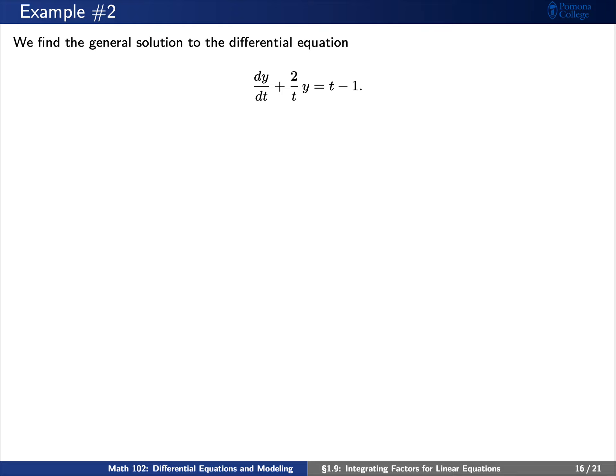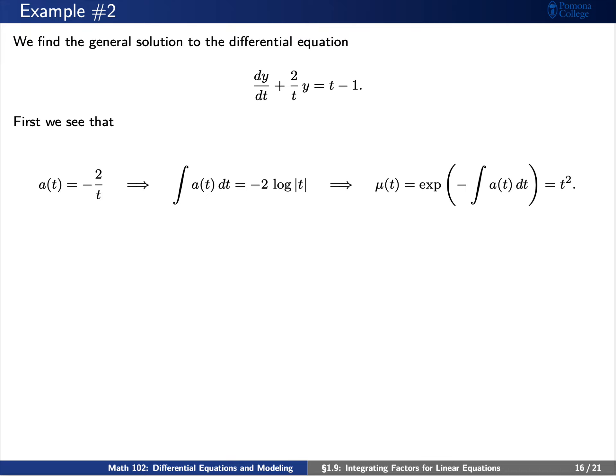Let's give a second example, using a slightly different method. We'll find the general solution to the following differential equation: dy/dt plus 2 over t times y equals t minus one. First, let's compute our integrating factor. Notice that a of t equals negative 2 over t. If we integrate a of t dt, we see that this equals negative 2 log of the absolute value of t. Now, mu of t is the exponential of negative this integral, so this is the exponential of twice log of t, which equals t squared. This is our integrating factor.